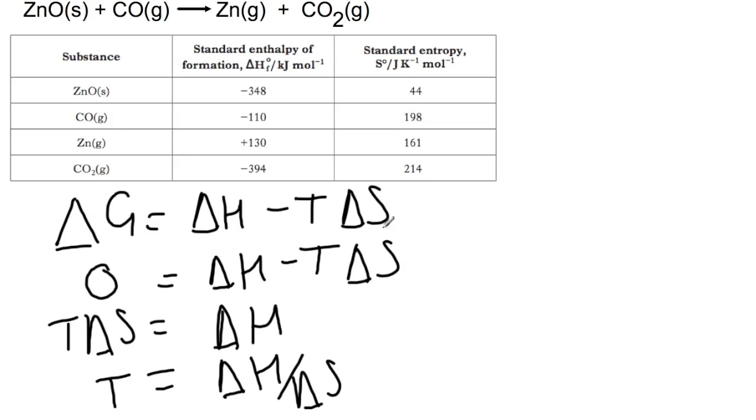At this point you need to decide what units you're using. I prefer to use kilojoules per mole but it is personal preference. So I'm going to change the delta S into kilojoules. So here T will equal 194 divided by 0.133 where I've divided delta S by 1000.